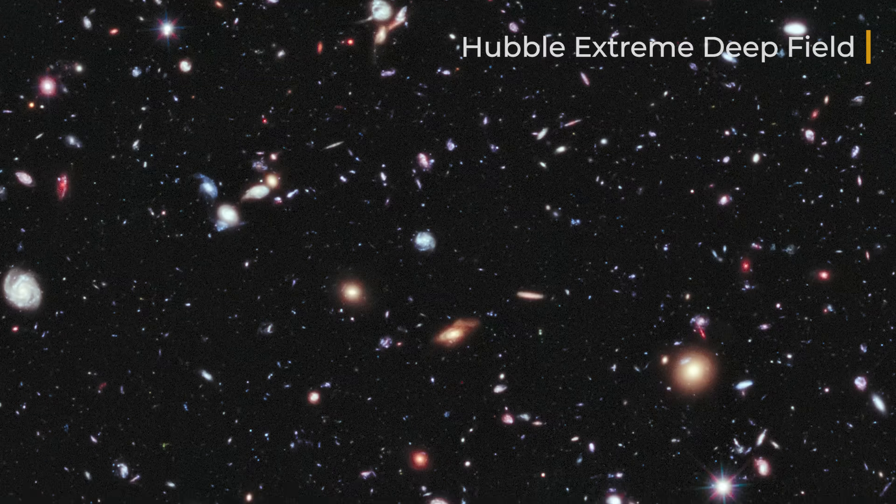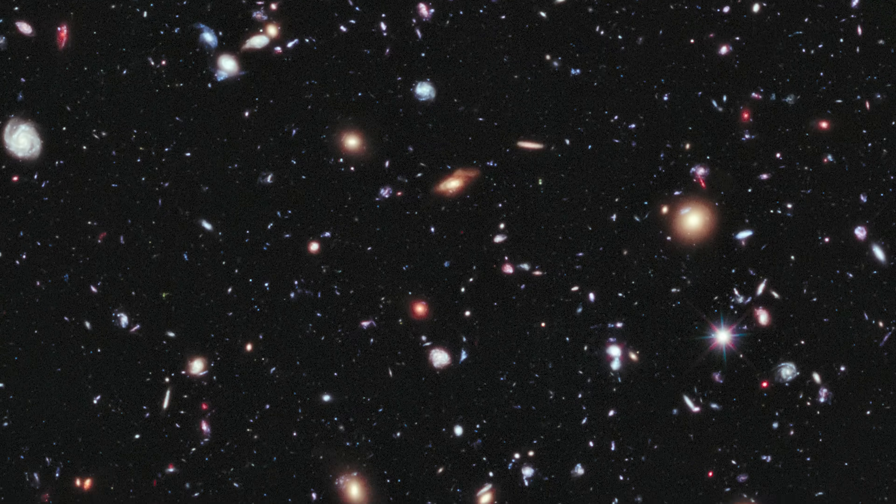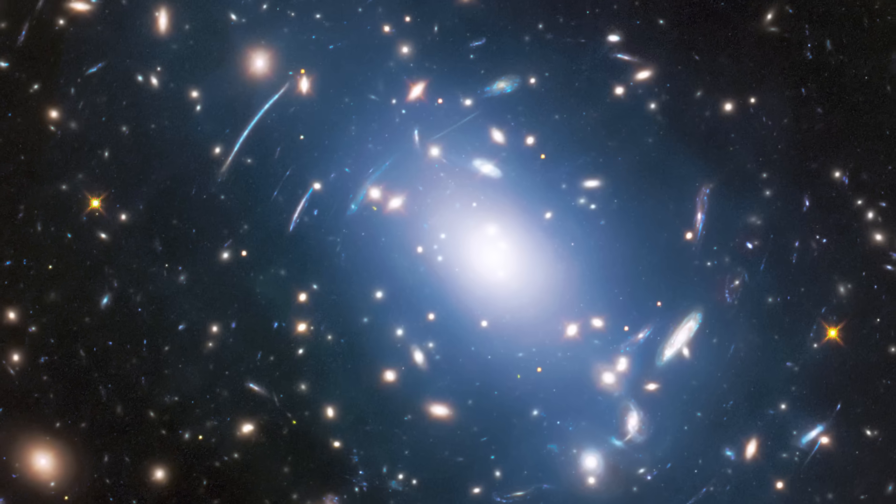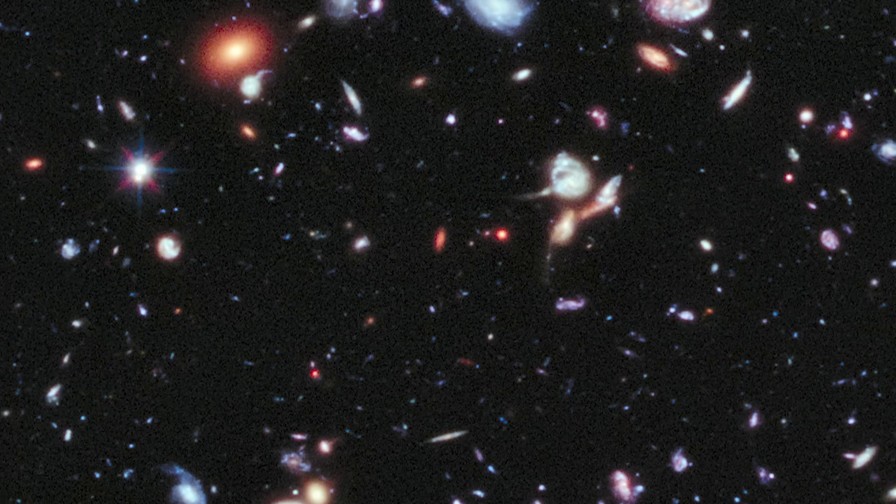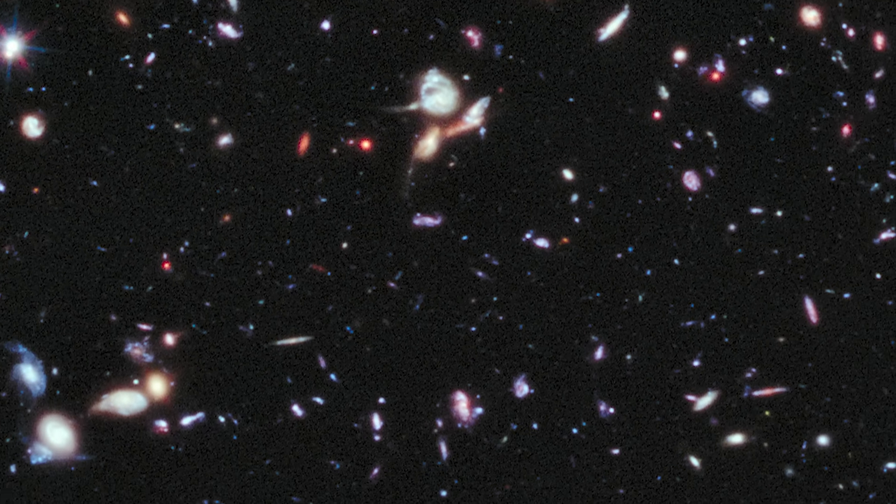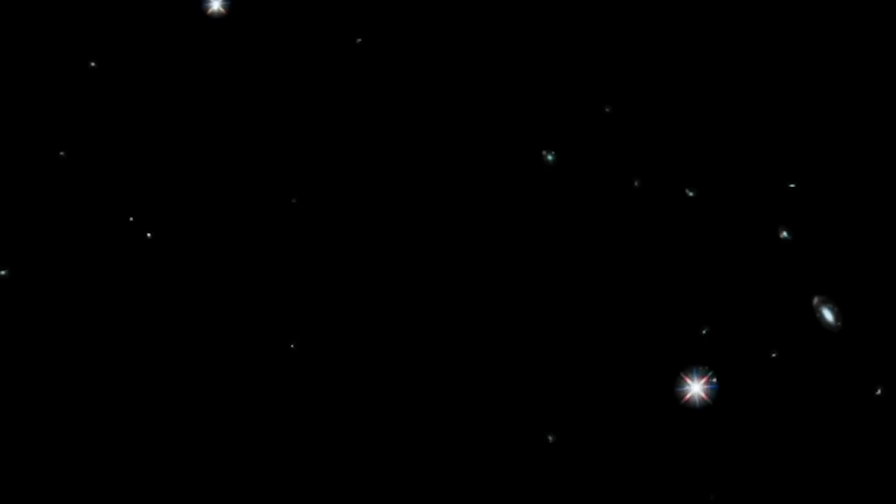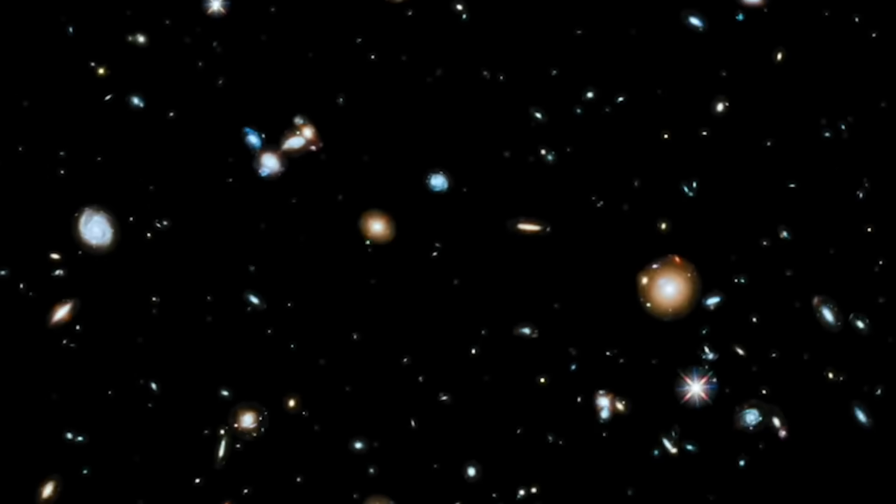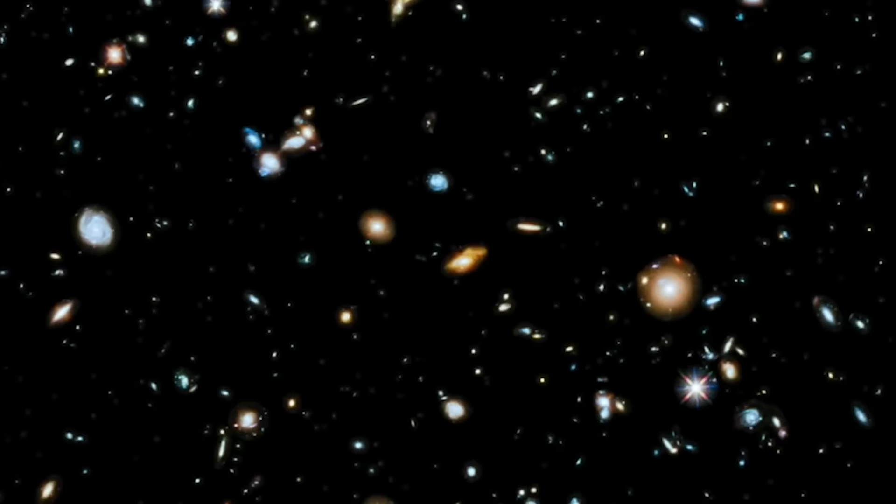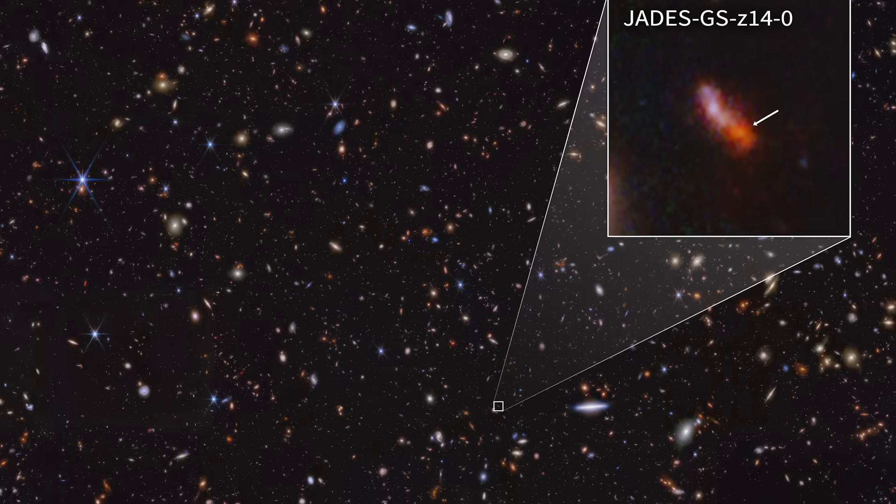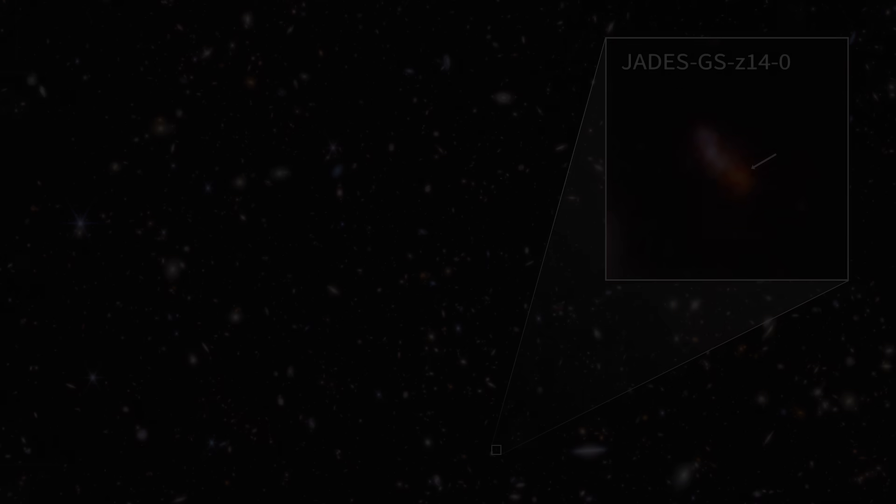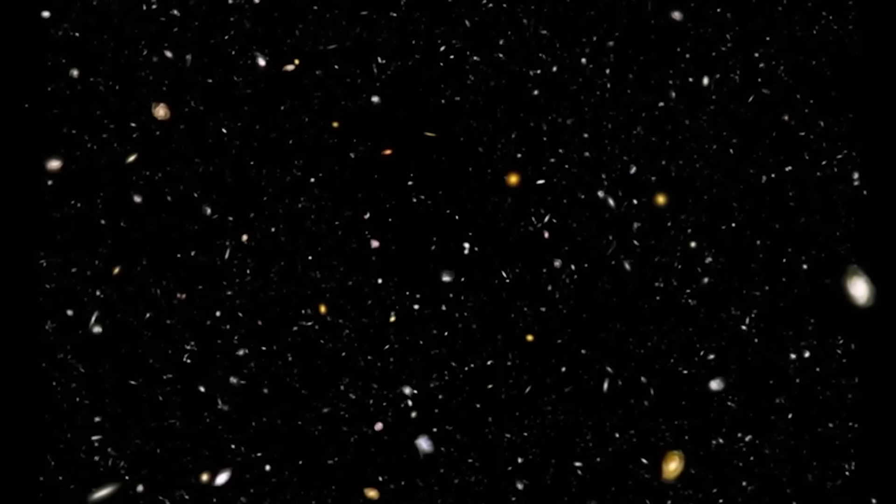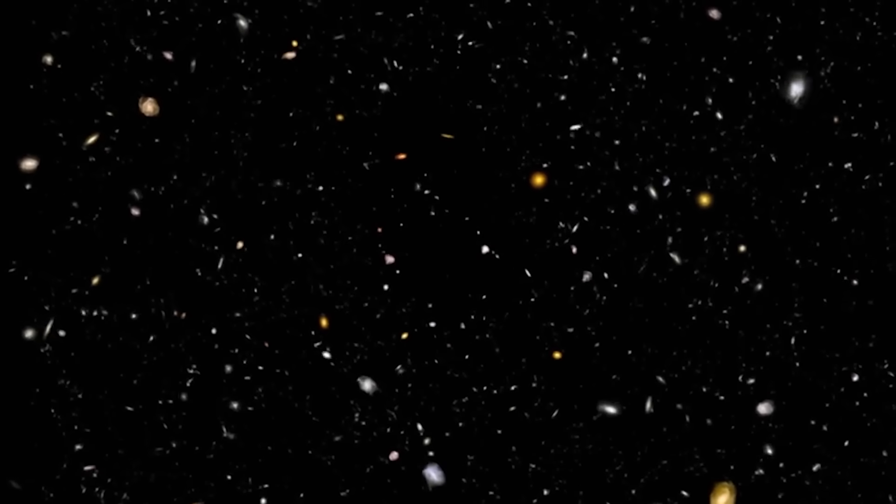Later efforts like the Hubble Extreme Deep Field and the Frontier Fields Program, which included galaxy clusters like Abell S1063, pushed the limits even further by using gravitational lensing to magnify the light from background galaxies. The idea behind deep fields is both simple and powerful. The longer you look, the more light you collect. And with more light, you can detect fainter and more distant objects, some so far away that their light has taken over 13 billion years to reach us. Looking at a deep field isn't just gazing into space, it's looking back in time.